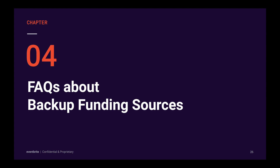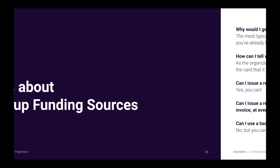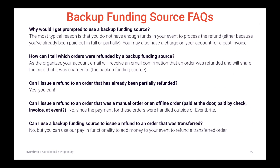I'm going to answer some of your frequently asked questions about backup funding sources. First, why would I get prompted to use a backup funding source? The most typical reason is that you don't have enough funds in your event to process that refund, either because you've been paid in full or you've received some sort of partial advance payment. You may also have a charge on your account for a passed invoice. How can I tell which orders were refunded by a backup funding source? As the organizer, the account email will receive an email confirmation that an order was refunded, and will share the card information that was used for that backup funding source.